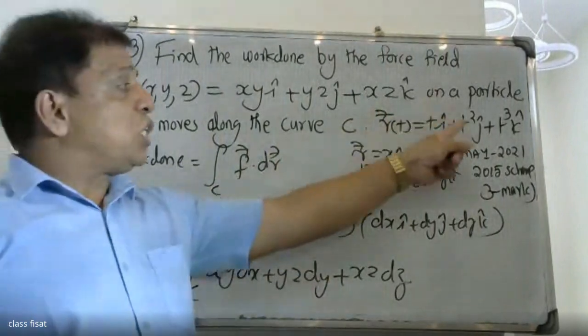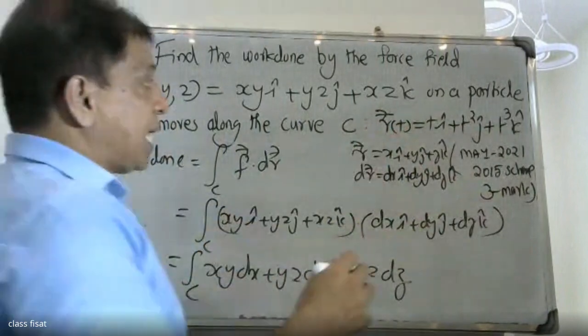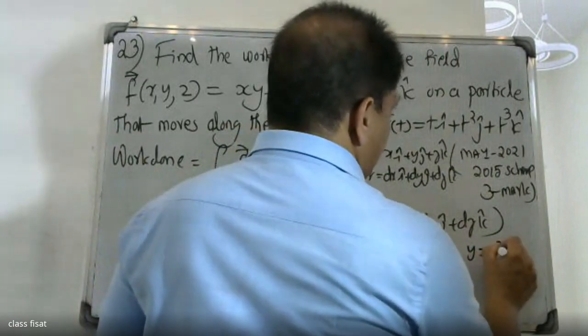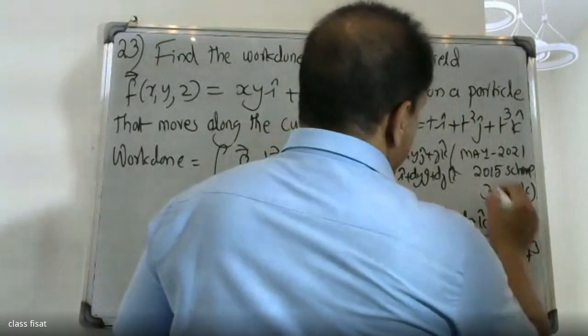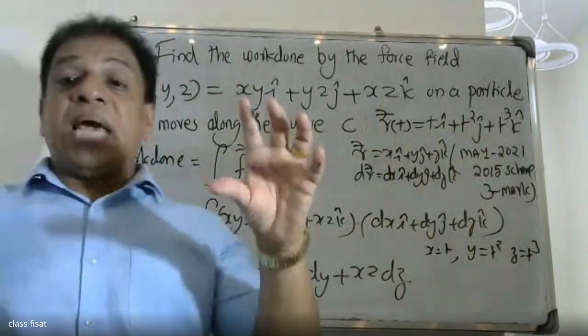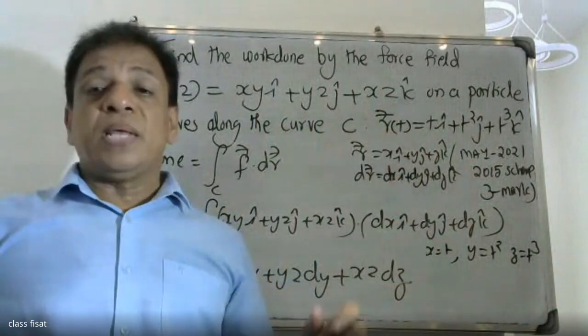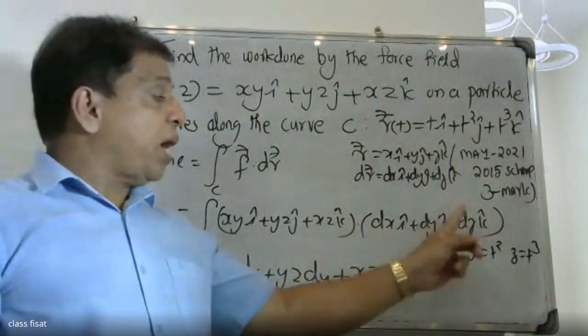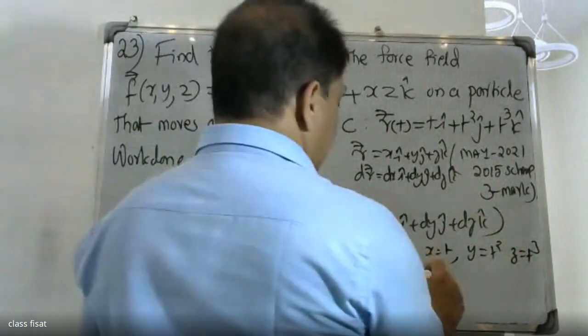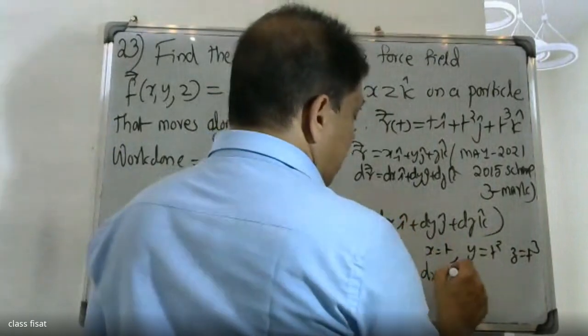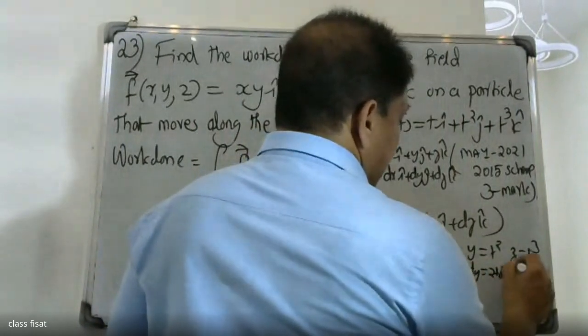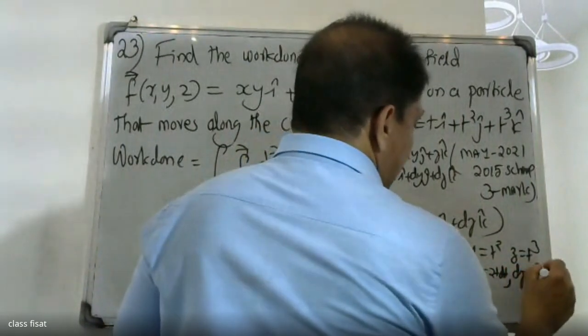Now, r(t) = t i + t² j + t³ k. Comparing with x i + y j + z k, we get x = t, y = t², and z = t³. Taking derivatives: dx is dt, dy is 2t dt, and dz is 3t² dt.